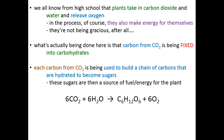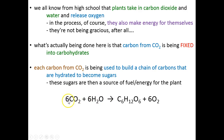Each carbon from each carbon dioxide molecule a plant takes in is used as a single carbon in a chain of carbons that will ultimately become hydrated carbons — carbohydrates, sugars. It's these sugars that plants make through photosynthesis that they live off of. They actually metabolize those sugars the exact same way we do. The basic formula: a plant takes in six molecules of carbon dioxide and six molecules of water, using those water molecules to hydrate each of the six carbons, creating the carbohydrate glucose.